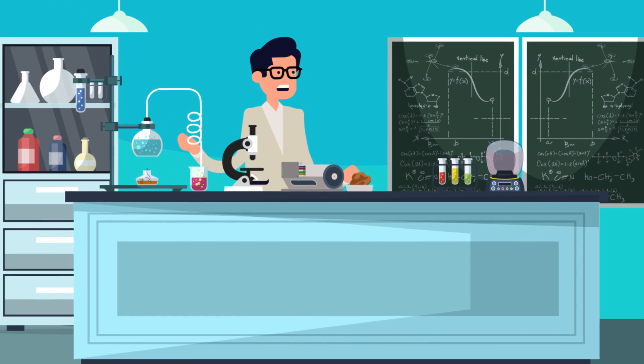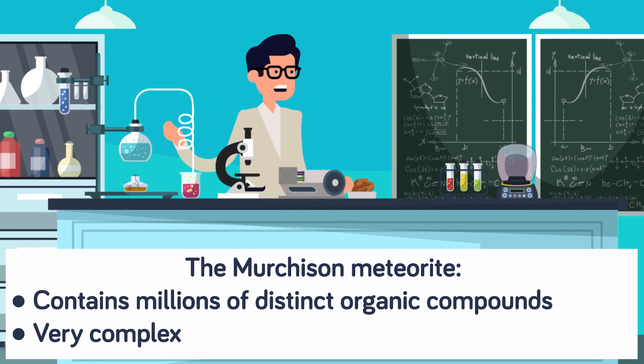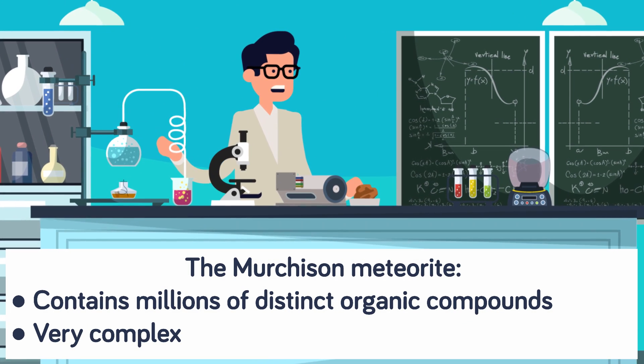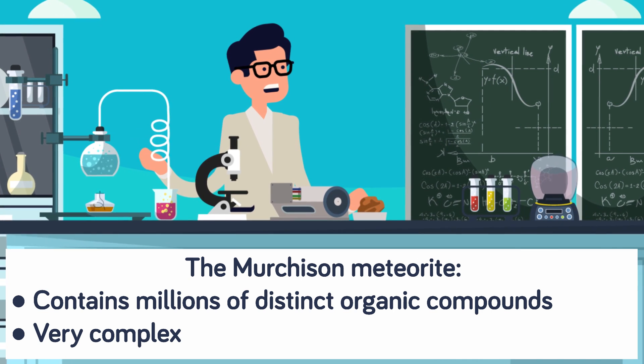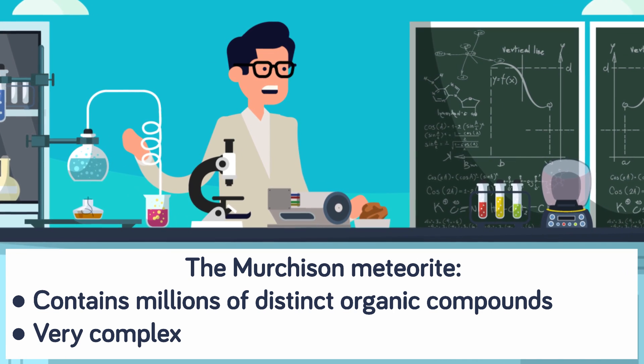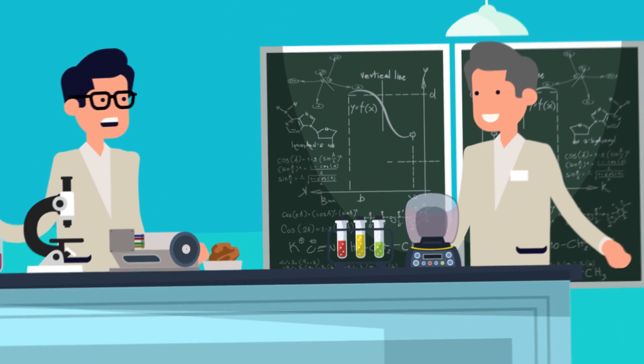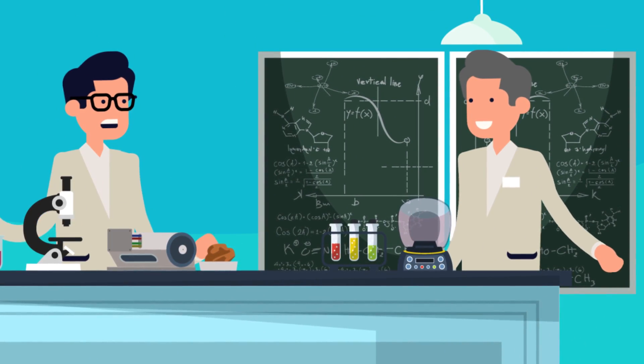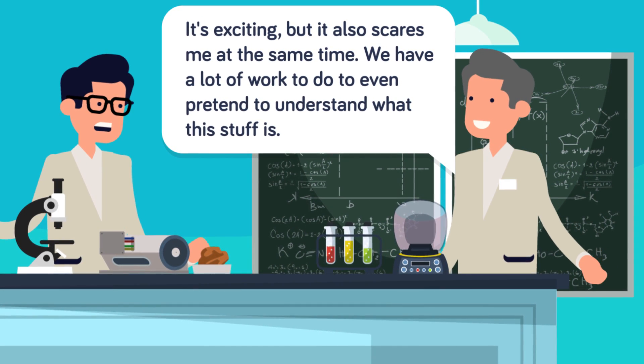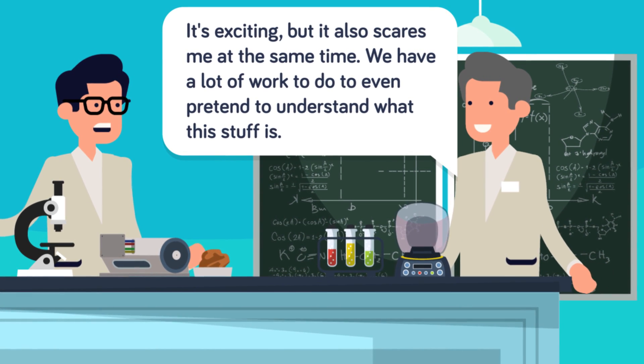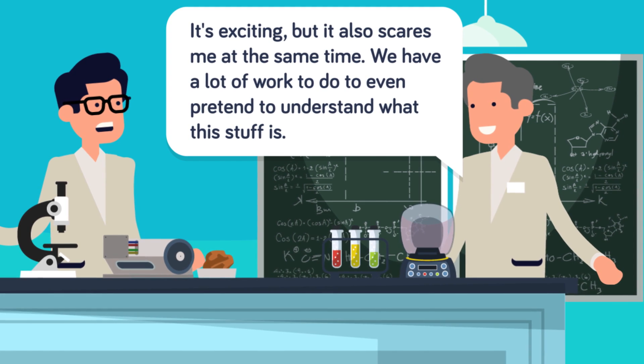Researchers have for many years been looking closely at the one that hit Australia in many pieces. In 2010 the Scientific American wrote about new research which revealed it contained millions of distinct organic compounds, and that it was far more complex than first thought. At the time scientists were still trying to work out just what the meteorite contained, since it was not straightforward. One researcher said, it's exciting, but also it scares me at the same time. We have a lot of work to do to even pretend to understand what this stuff is.